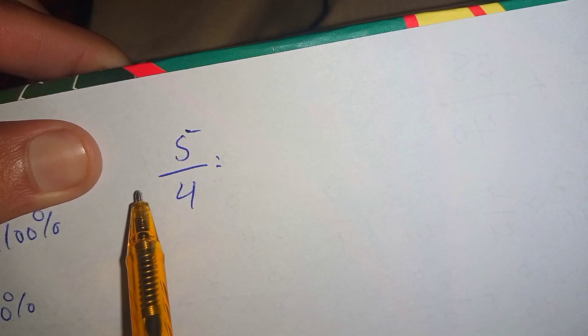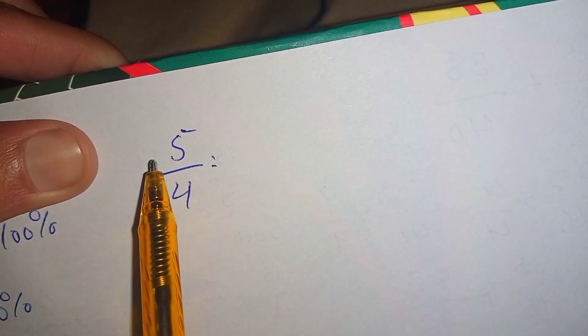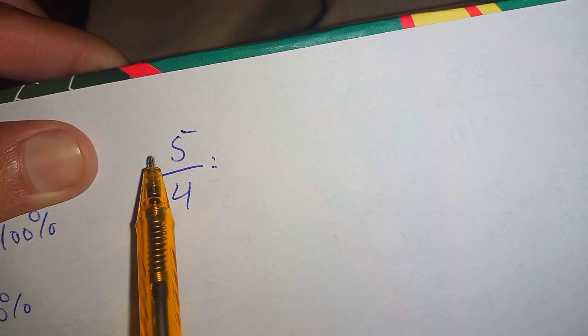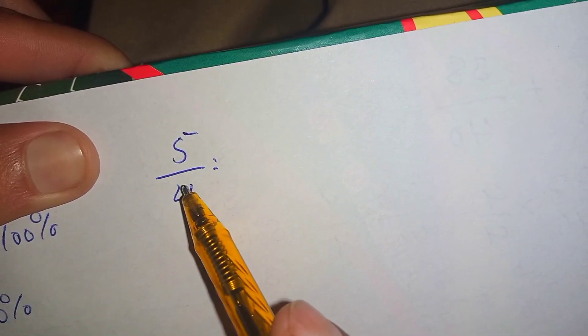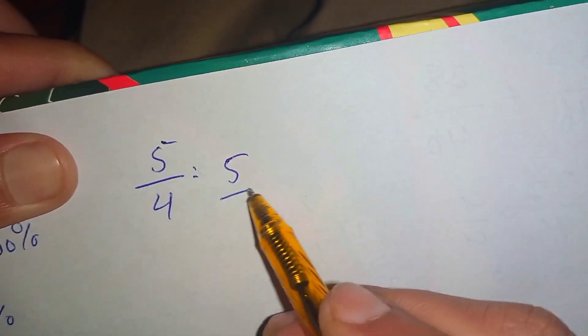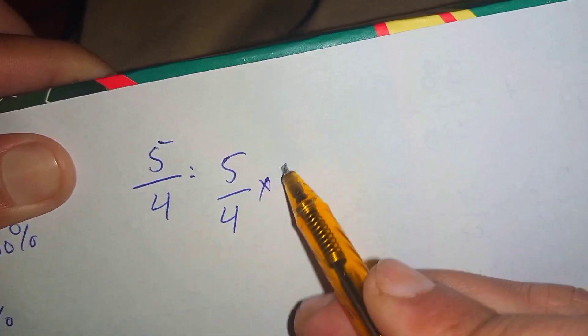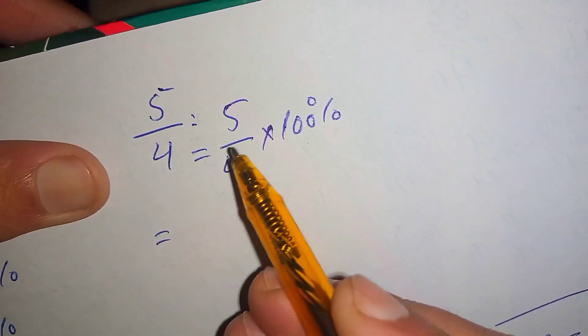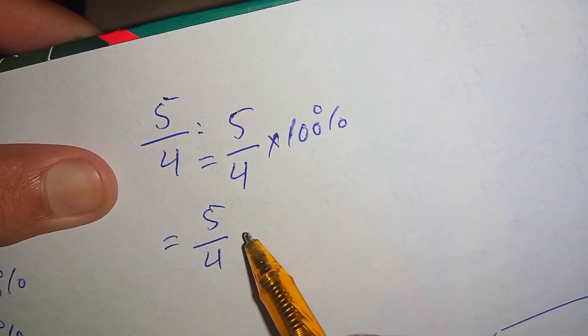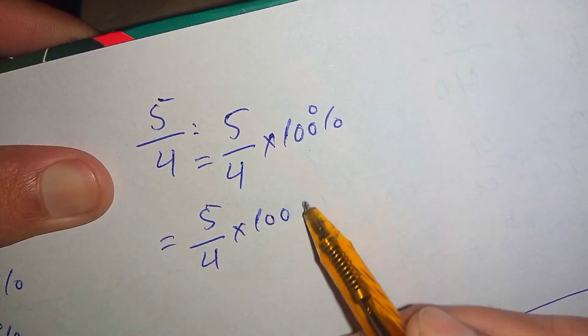Now we look at another number, which is 5 over 4. Here we see that it is not a proper fraction but an improper fraction — the denominator is 4 and the numerator is 5. We can convert this improper fraction into a percentage: 5 over 4 multiplied by 100 percent.